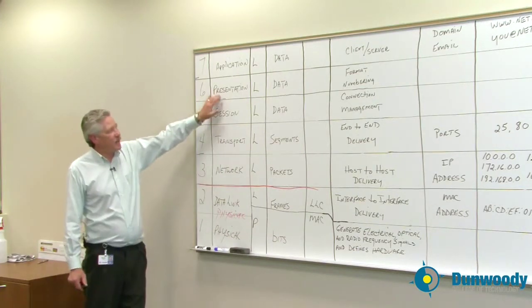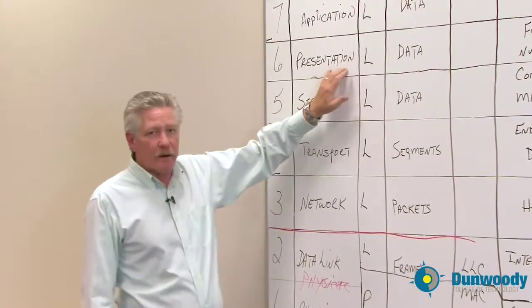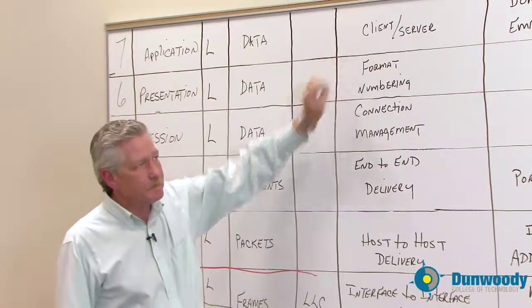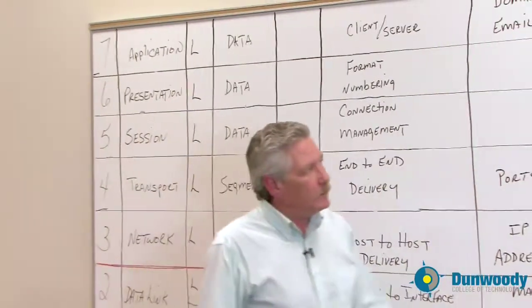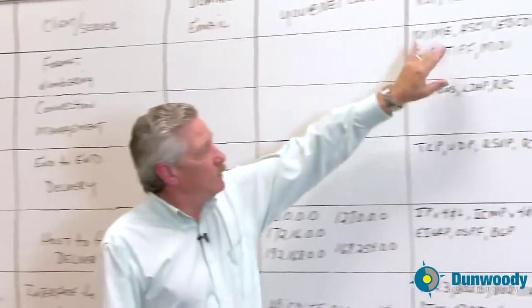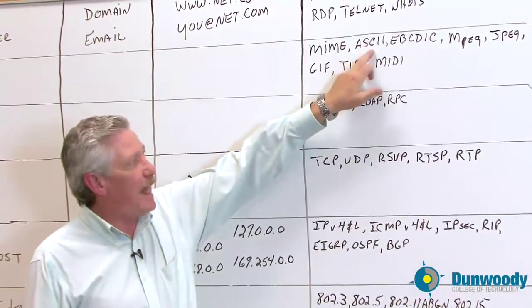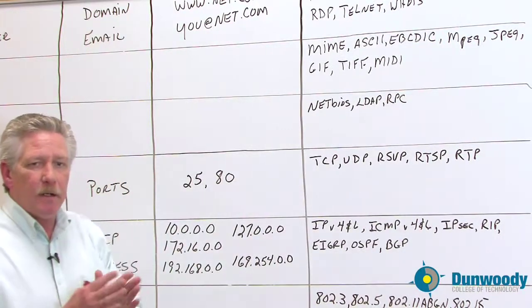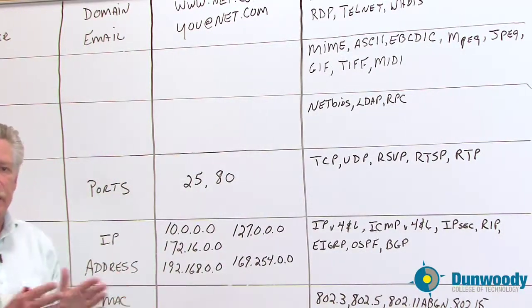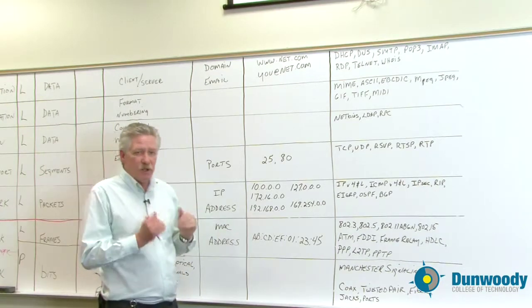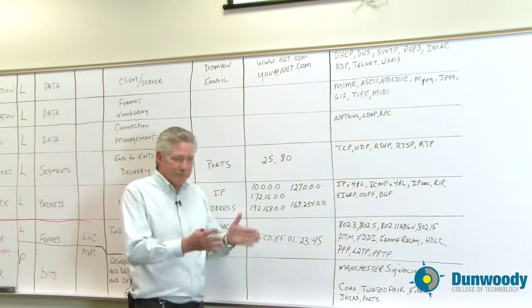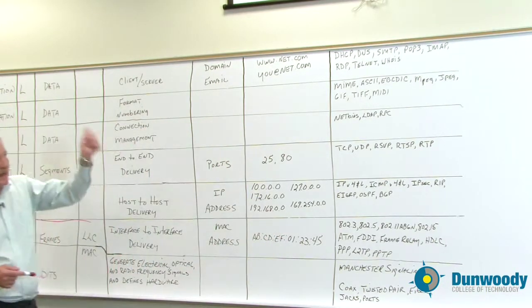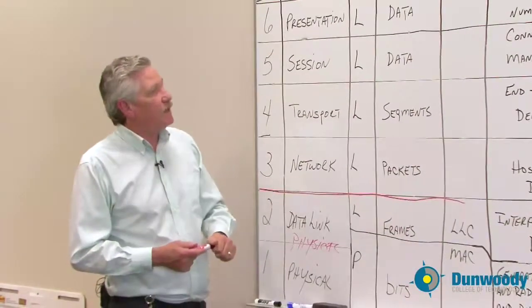Then we have the presentation layer. And it really sounds like what, it does what it says. It formats and numbers things. So in the example that I used the last time, remember we were talking about ASCII, where you type a letter A, it tells the machine it's this many bits of ones and zeros. And that means to you it's an A, to the computer it deals with it as an A. And then we also have like MPEG, JPEG for pictures and movies and music.